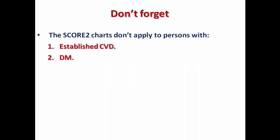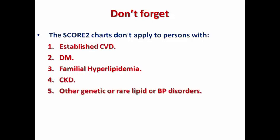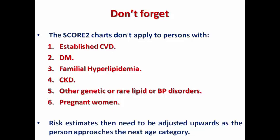Don't forget that the SCORE2 algorithm does not apply to persons with established cardiovascular disease, diabetes, familial hyperlipidemia, CKD, other genetic or rare lipid or blood pressure disorders, or pregnant females. Also note that risk estimates need to be adjusted upwards as the person approaches the next age category — this is a dynamic process requiring reclassification as the patient advances in age. There is a Class I indication that in apparently healthy people under 70 years, estimation of 10-year fatal and non-fatal cardiovascular risk using SCORE2 is recommended; and for those aged 70 or older, SCORE2-OP is recommended.